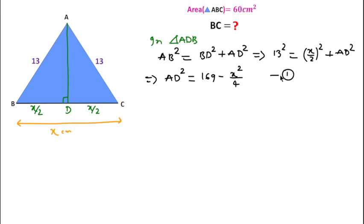Also we know area of triangle ABC equals 1 over 2 base into height. Base is BC and height is AD. According to the question, area of triangle ABC is given as 60 cm square, which equals 1 over 2 times x times AD.